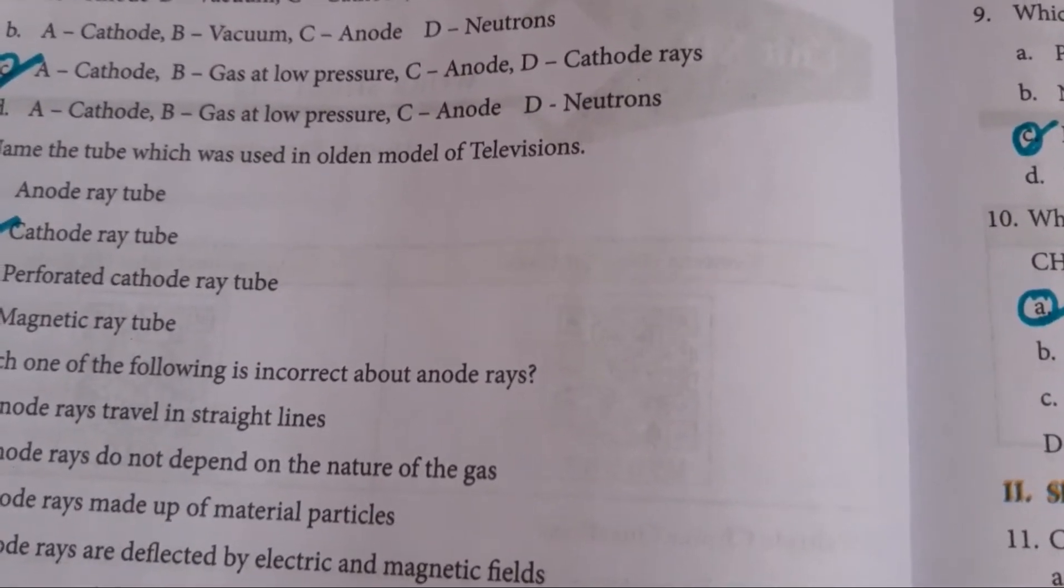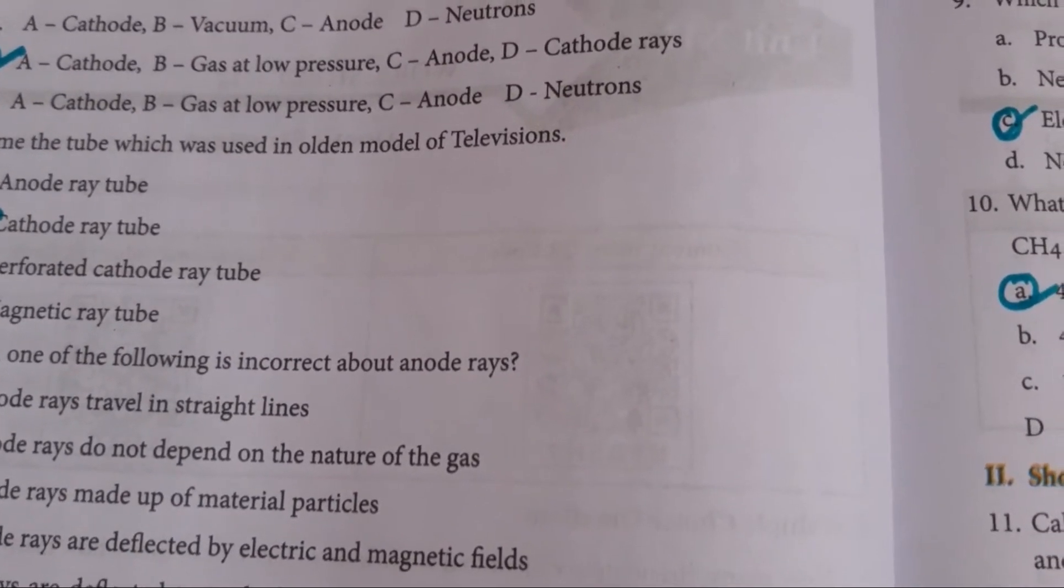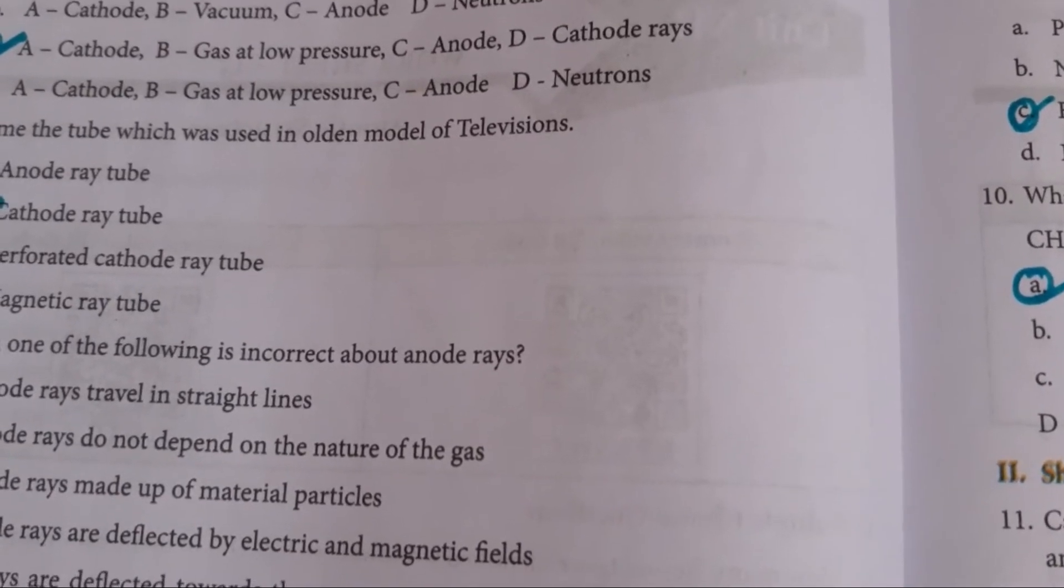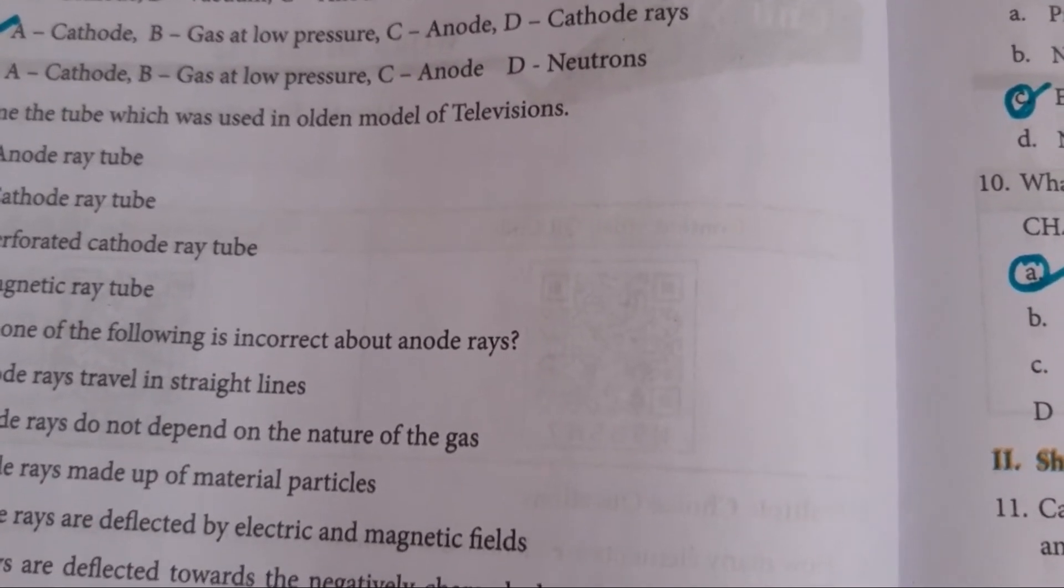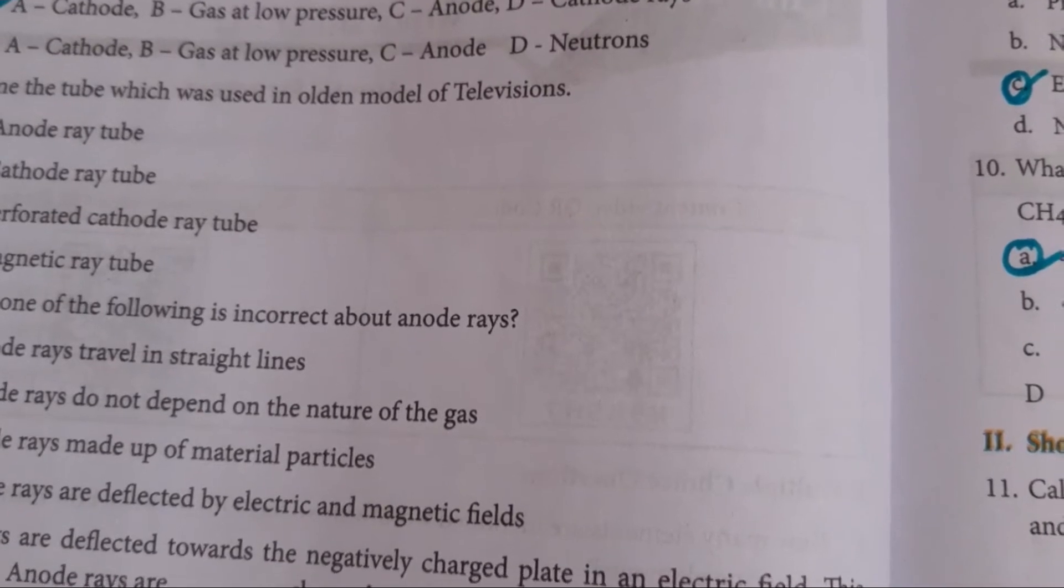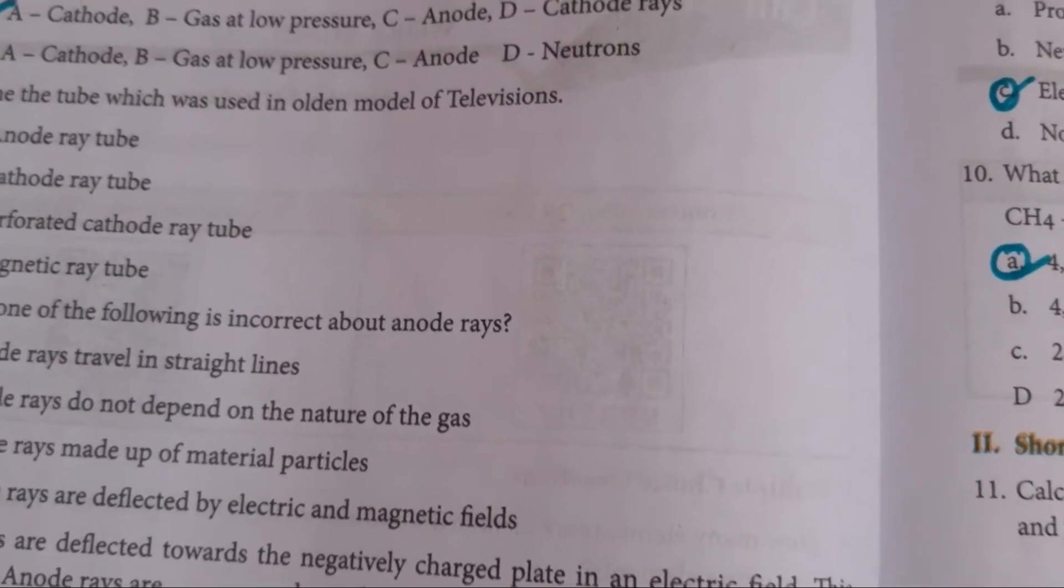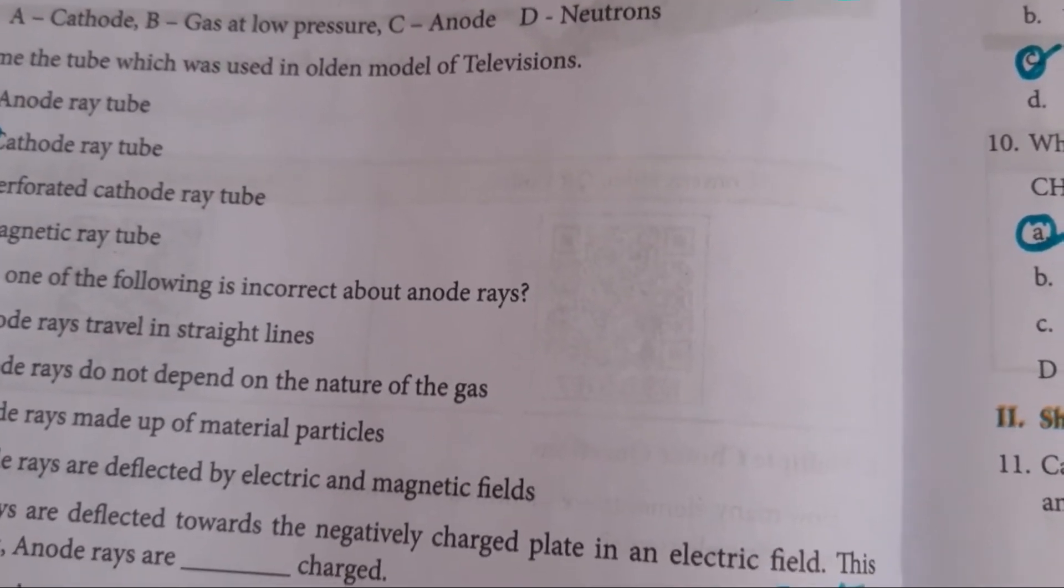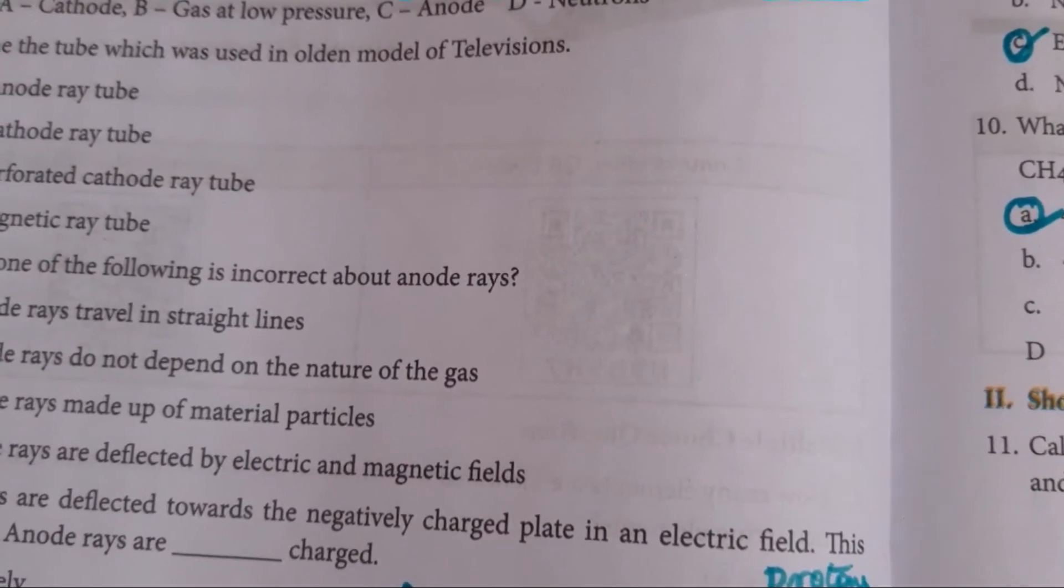Then fourth one, name the tube which was used in olden model of televisions. So cathode ray tube is used. Nowadays, we are using LED and LCD TVs. But here, in olden days, we are using cathode ray tube. So answer is B.